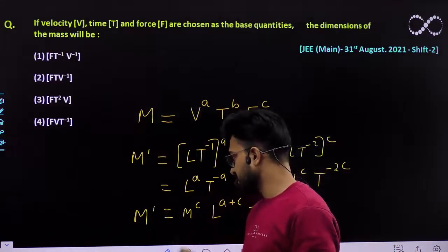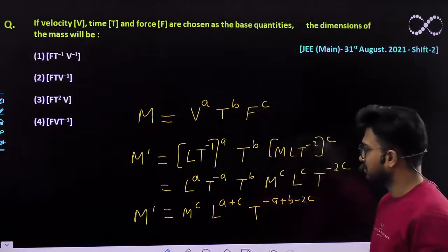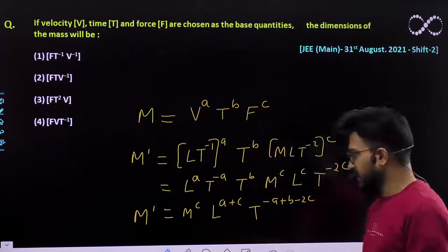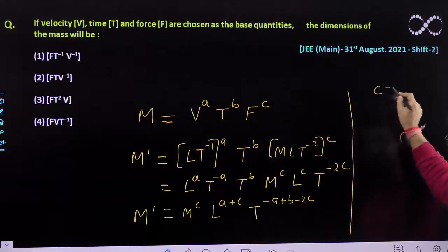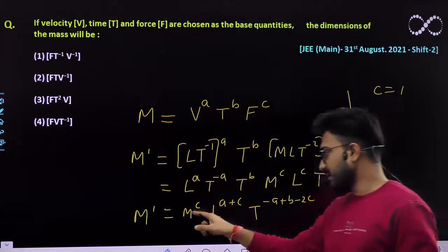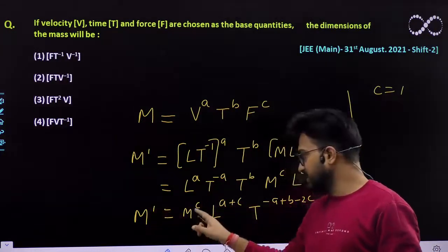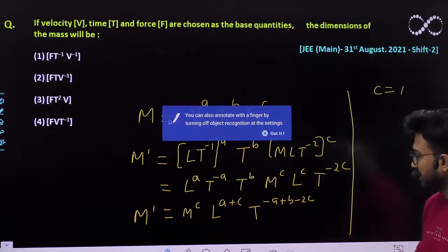Here M is raised to power 1. So by equating left and right hand side, you can easily say that c must be equal to 1. So the power of mass is 1 only, so this c must be equal to 1.